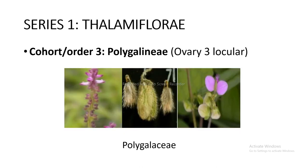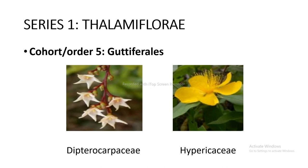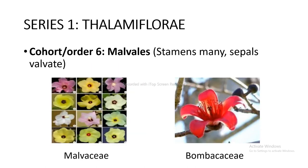Cohort and order 3 Polygalinae — locules unilocular — includes Polygalaceae as shown in the figure. Cohort and order 4 Caryophyllinae — placentation free central or axile — includes Cactaceae and Caryophyllaceae as shown in the figure. Cohort and order 5 Guttiferales — includes Dipterocarpaceae and Hypericaceae as shown in the figure. Cohort and order 6 Malvales — stamens many and episepalous — includes Malvaceae and Bombacaceae as shown in the figure.